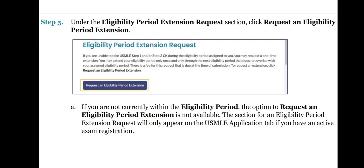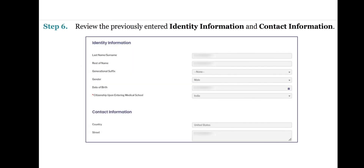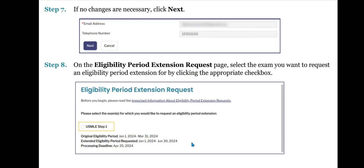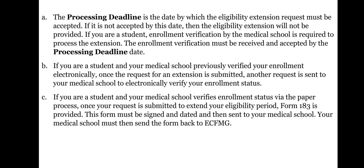The section for an eligibility period extension request will only appear on the USMLE Application tab if you have an active exam registration. Step 6: Review the previously entered identity information and contact information. Step 7: If no changes are necessary, click Next. Step 8: On the Eligibility Period Extension Request page, select the exam you want to request an extension for by clicking the appropriate checkbox. The processing deadline is the date by which the eligibility extension request must be accepted — if not accepted by this date, the extension will not be provided. If you are a student, enrollment verification by the medical school is required. Once the request is submitted, another request is sent to your medical school to electronically verify your enrollment status.